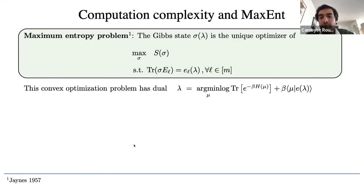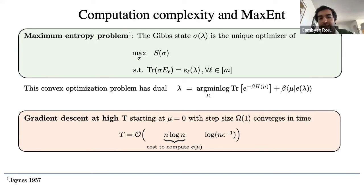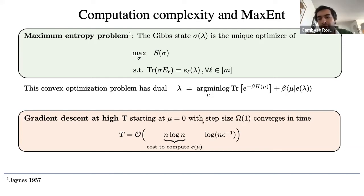Regarding computational complexity, we rely on the max-entropy problem: a convex optimization problem that maximizes the entropy of a Gibbs state under constraints fixing the averages of the elementary interactions E_l. The dual of that optimization allows us to redefine parameter λ as the minimizer of a target function. Using this together with a gradient descent algorithm initiated at infinite temperature (μ=0), we prove that the computational complexity scales linearly in the number of particles, up to polylogarithmic overhead.